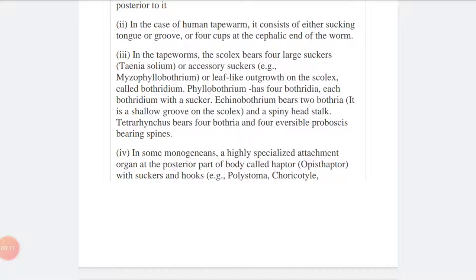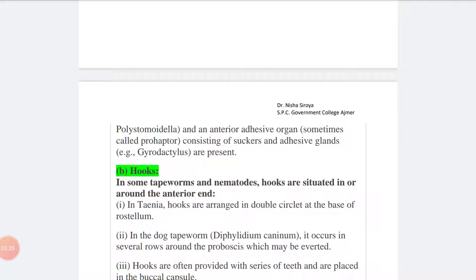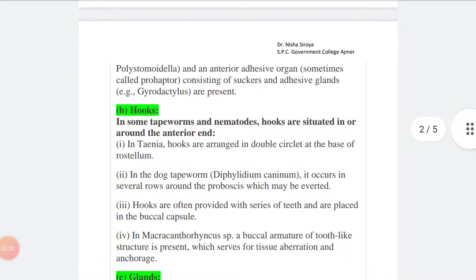In some monogeneans, a highly specialized attachment organ at the posterior part of the body called haptor or opisthaptor, with suckers and hooks like in Polystoma. An anterior adhesive organ, sometimes called the prohaptor, consisting of suckers and adhesive glands. These structures are present in different species which live as parasites.